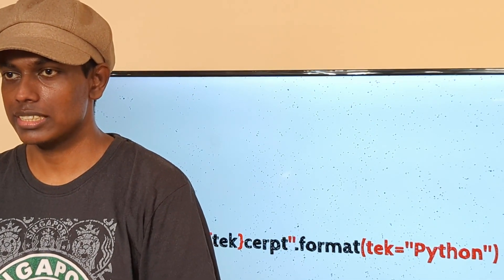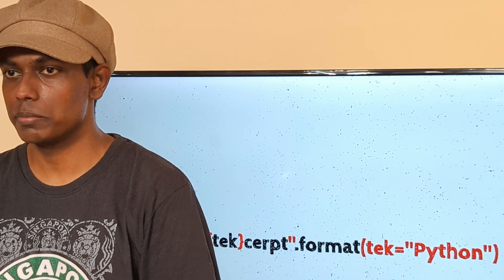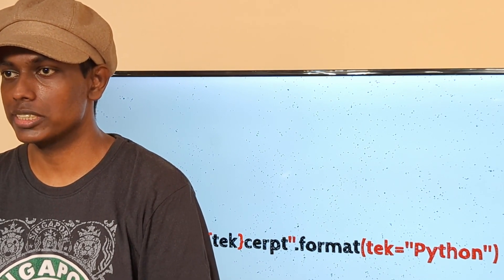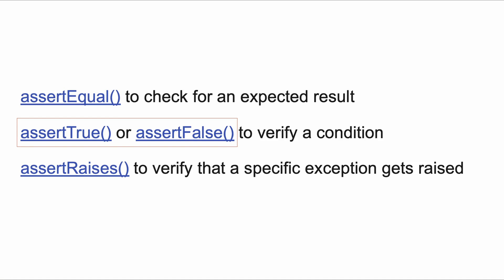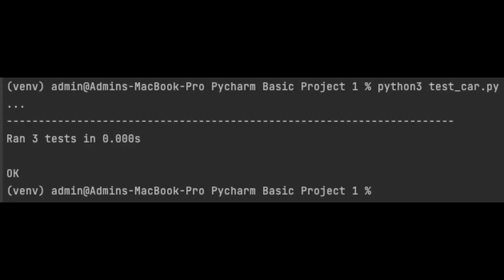Theoretically, we can use assert statements to verify the values written by the methods of our class. Practically, the unit test framework provides many other assertion methods. A few of them are: assertEqual to check for an expected result, assertTrue or assertFalse to verify a condition, and assertRaises to verify that a specific exception gets raised. By using these methods instead of plain assert statements, we can accumulate all the test results and produce a report at the end.